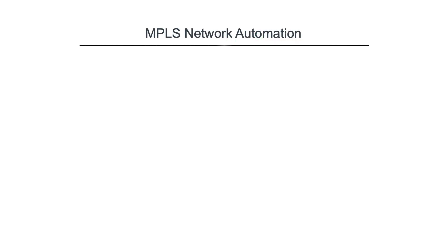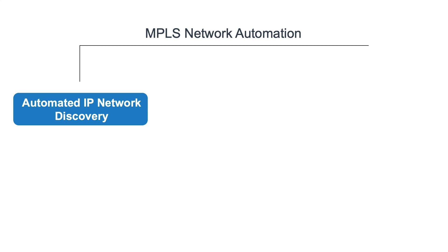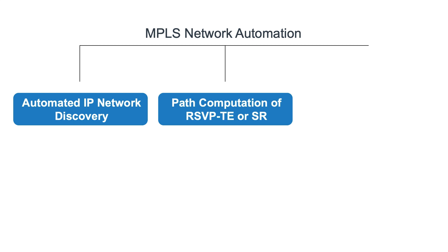At a high level, the Blue Planet MPLS Network Automation solution provides: automated IP network discovery, maintaining an accurate view of network topology, state, available capacity, and end-to-end performance as the network changes; automated constraint-based, SRLG-aware path computation of either RSVP-TE or segment-routed tunnels; and automated tunnel provisioning across multi-vendor and multi-AS networks.